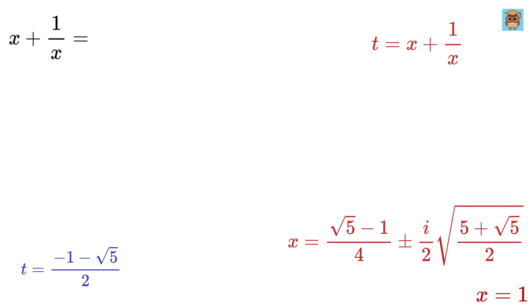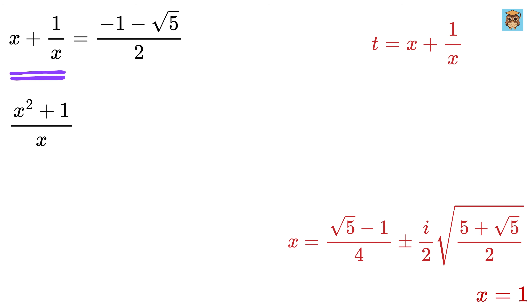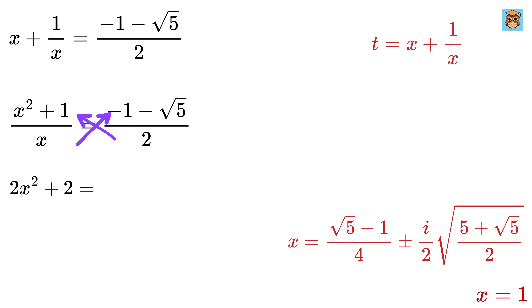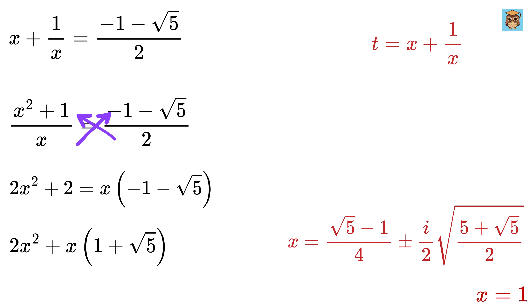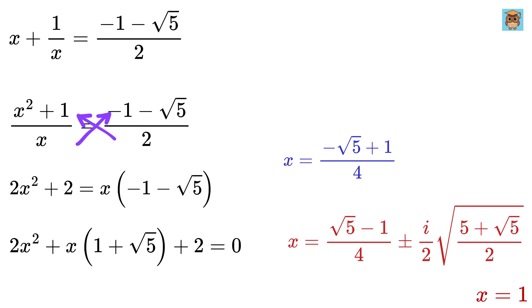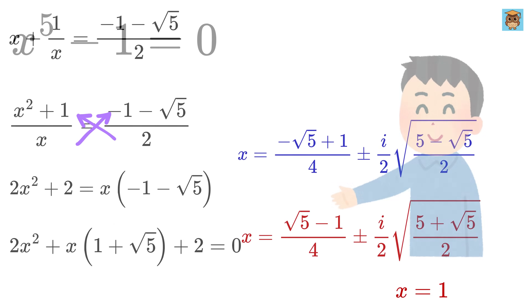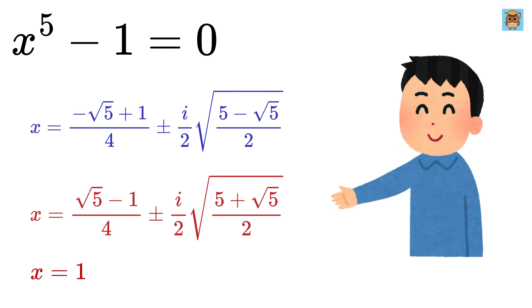Similarly, when t equals (minus 1 minus √5) / 2, we solve x + 1/x equals that value. This gives 2x² + x(1 plus √5) + 2 equals 0. Solving yields x equals (minus √5 minus 1)/4 ± i/2 · √((5 minus √5)/2). Overall, these are the five values of x which satisfy the equation x⁵ minus 1 equals 0.